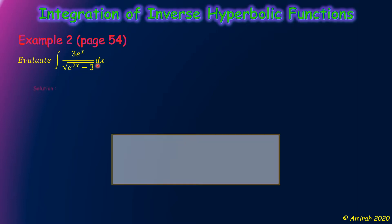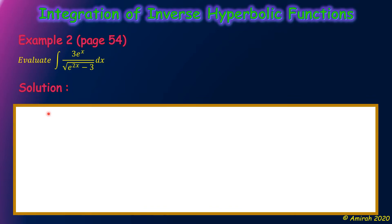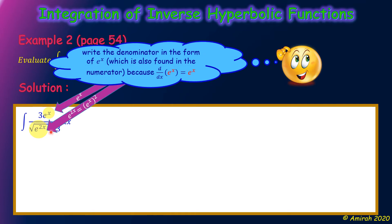The solution is as follows. From the given question, we have the denominator e^(2x) and numerator e^x.